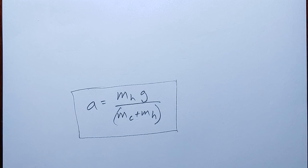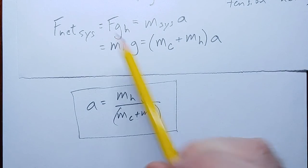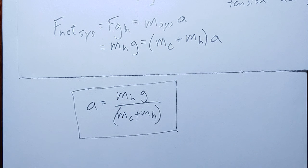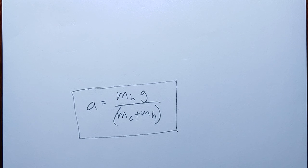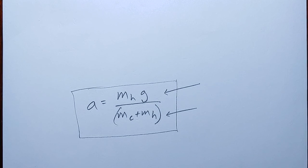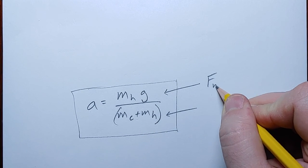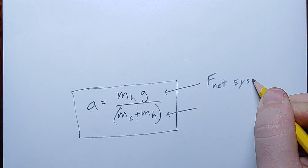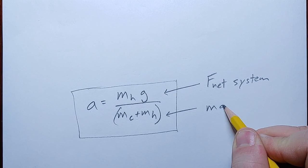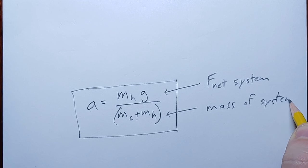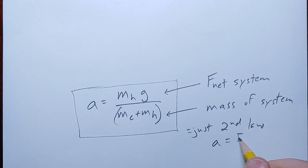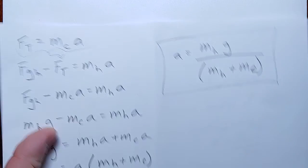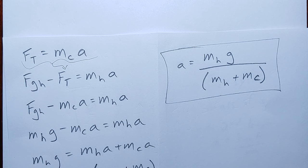Just to be clear on what we really did here: the net force on the system equals the mass of the system times the acceleration — that's exactly Newton's second law. The expression we arrived at is just a rearranged version: acceleration equals net force divided by mass. The expression we came up with originally using the tensions was just a restatement of Newton's second law, treating everything as a single system.